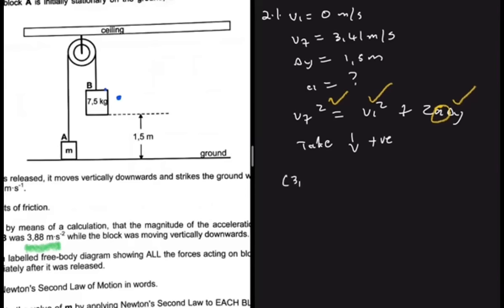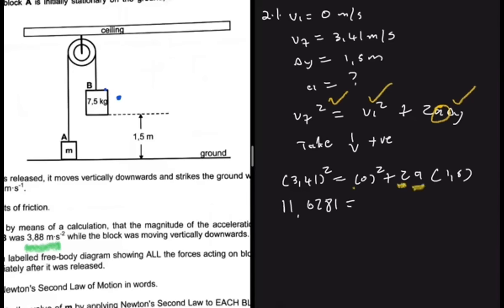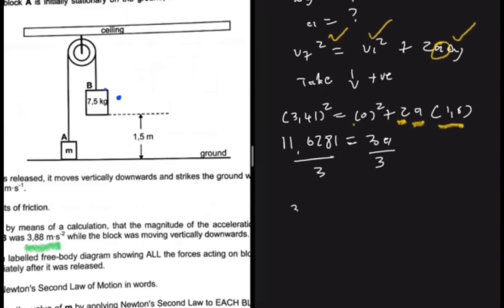Substituting: (3.41)² = (0)² + 2a(1.5), giving 11.6281 = 3a. Dividing both sides by 3, acceleration equals 3.88 m/s². That is exactly what we were asked to prove, so we are confident we are on the right track.